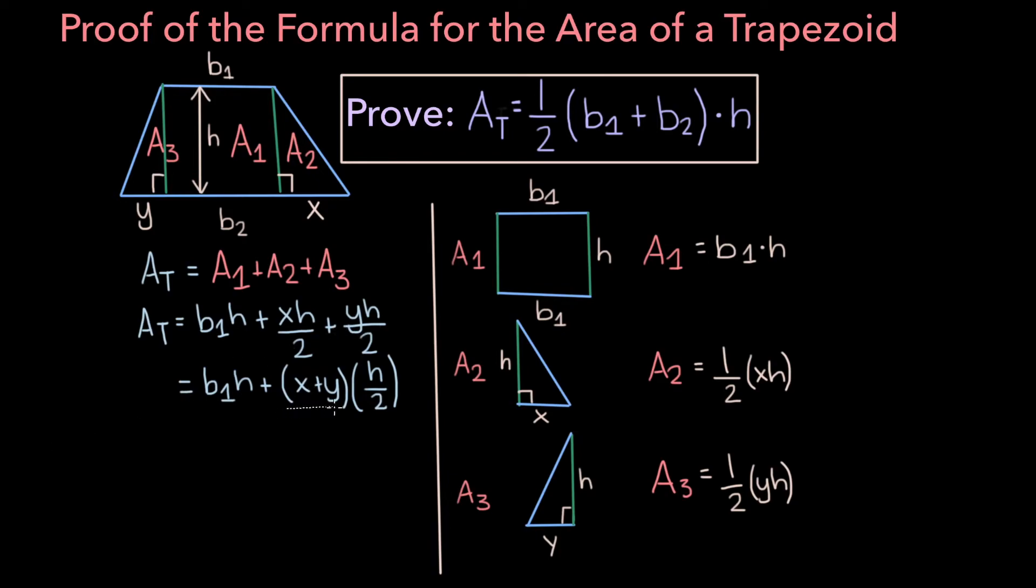Now the one term that's really interesting right now is this x plus y term. If we look back at the formula that we're trying to derive, the formula that we're trying to get to, you'll notice that it's in terms of b1, b2, and h. And this means we have to find some way to get rid of this x plus y.